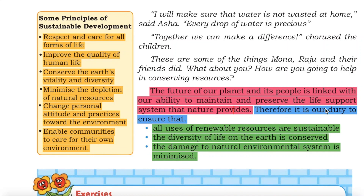Some principles of sustainable development: Respect and care for all forms of life. Improve the quality of human life. Conserve the earth's vitality and diversity. Minimize the depletion of natural resources. Change personal attitude and practices towards the environment. Enable communities to care for their own environment.